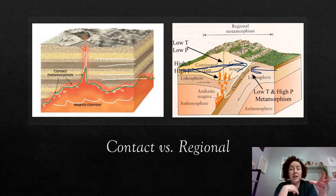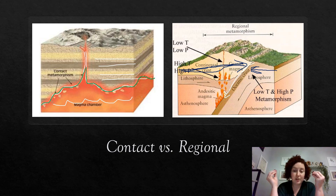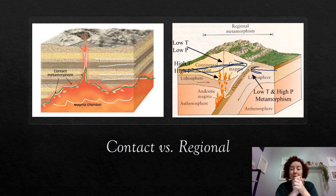To summarize: with contact metamorphism, you have rock physically coming into contact with very high temperatures. With regional metamorphism, you have two plates coming together and applying a great amount of pressure.